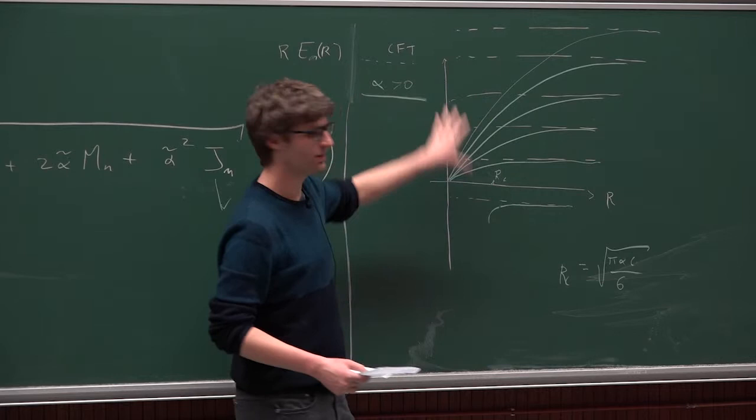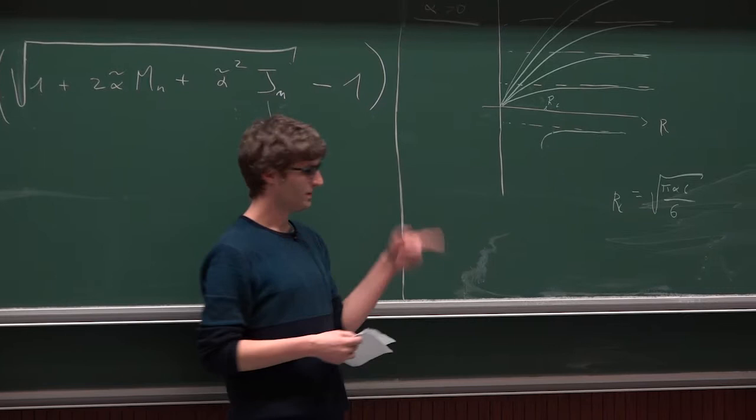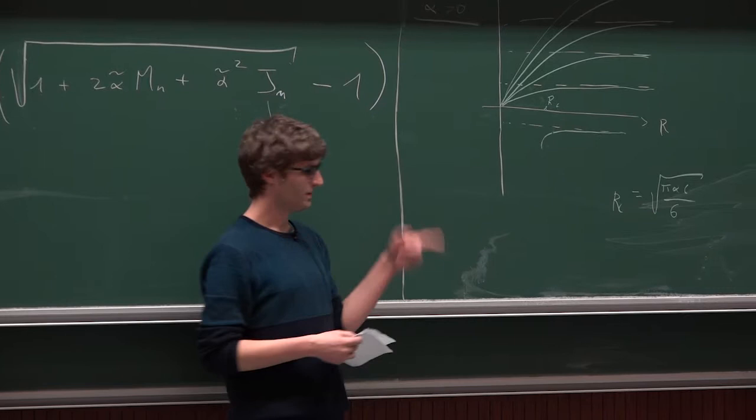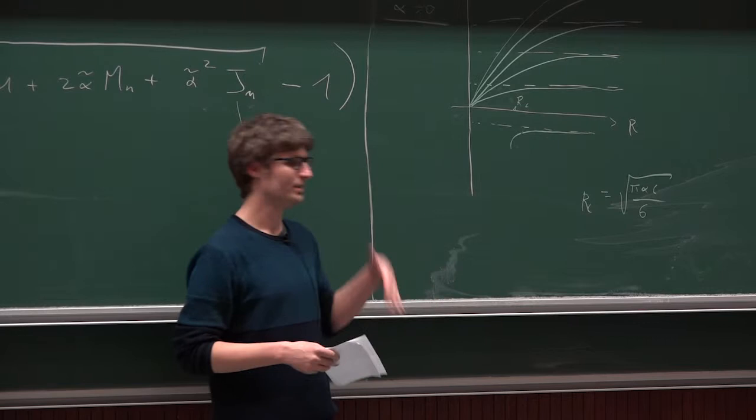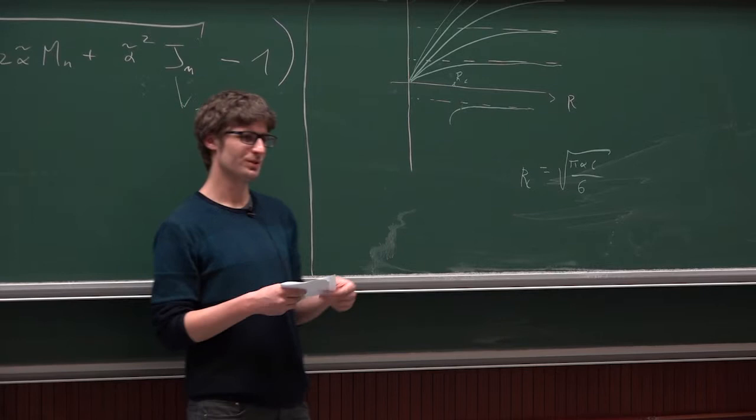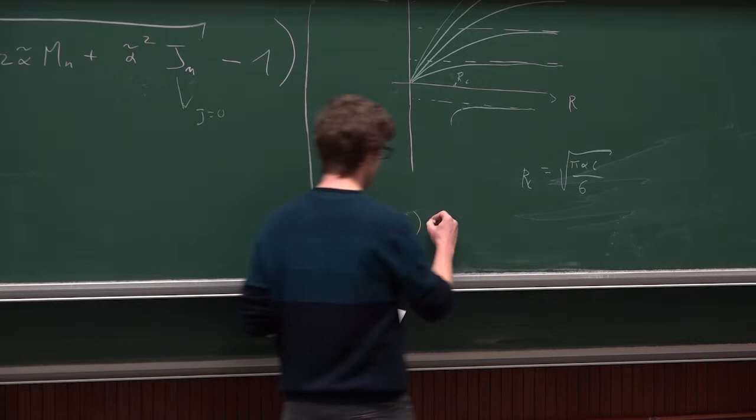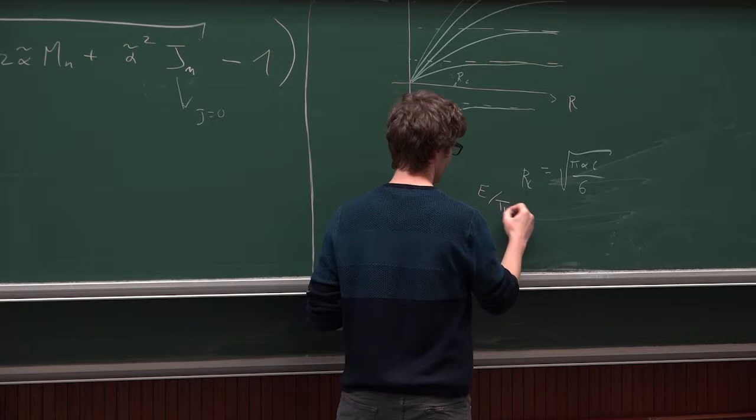So, if you take any quantum field theory, you will find something like this happening. Well, if you put the theory on a torus, the periodic dimension can be interpreted as an inverse temperature. So the fact that you cannot put it on a torus that's smaller than R tells you that there is a maximum temperature that you can reach that is called the Hagedorn temperature. It's because if you count the number of states for a given energy, for very large energy, this will grow exponentially.